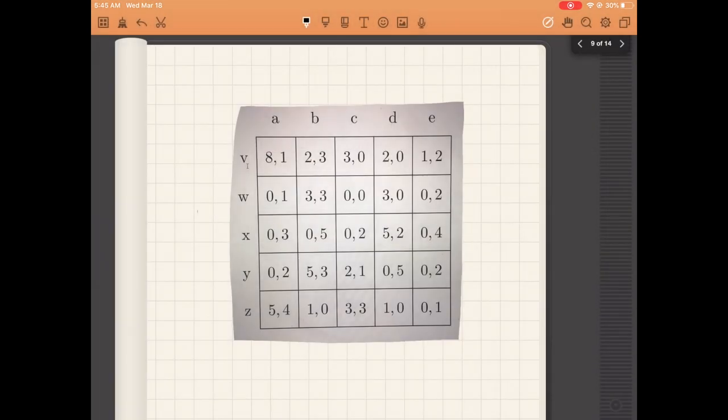For problem four, I copied a table so we can do iterated dominance. First, mark best responses to a, b, c, d, and e. For the column player, mark best responses to v, w, x, y, and z. We see that v, x, y, and z are best responses to something, so they can't be dominated. For w, we need to check each action—w is not dominated by v, x, y, or z.